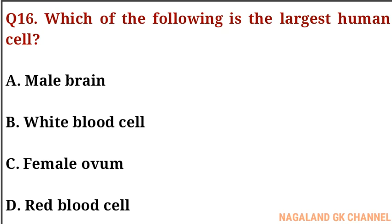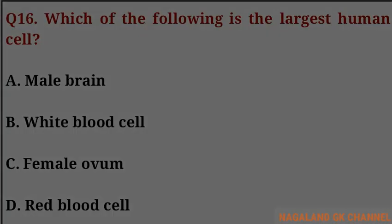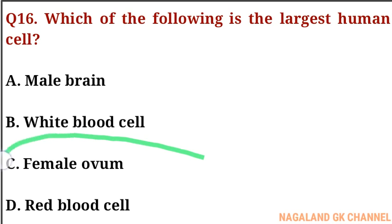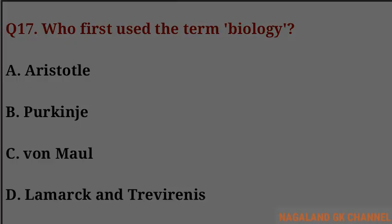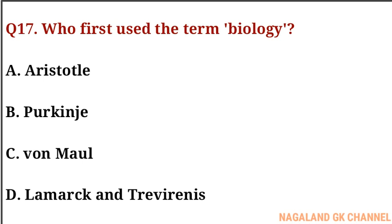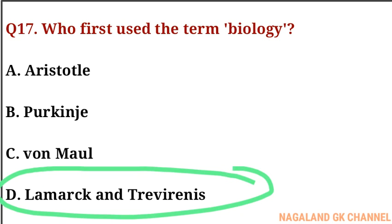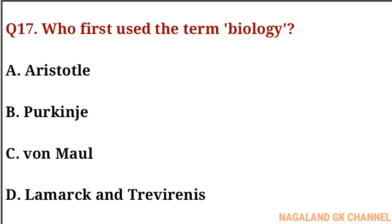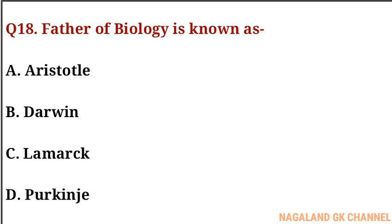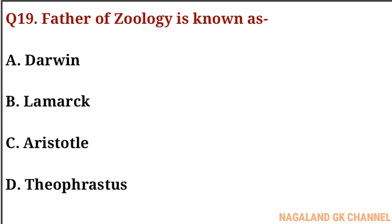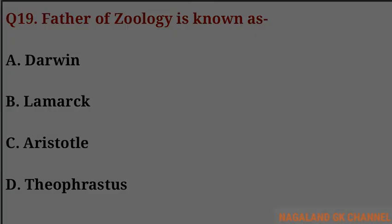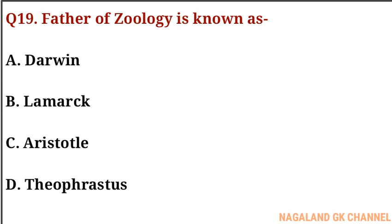Question number sixteen: which of the following is the largest human cell? The correct answer is option C, that is the female ovum. Question number seventeen: who first used the term biology? The correct answer is option D, that is Lamarck and Treviranus. Question number eighteen: who is the father of biology? The correct answer is option C, that is Aristotle. Question number nineteen: who is the father of zoology? The correct answer is option C, that is Aristotle.